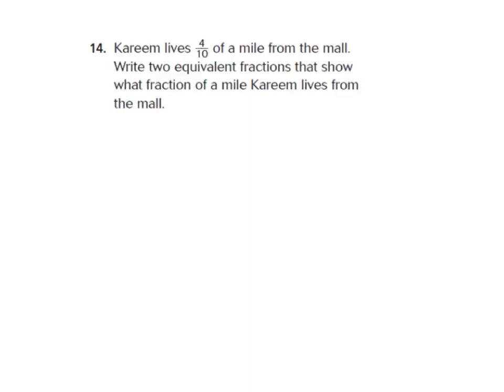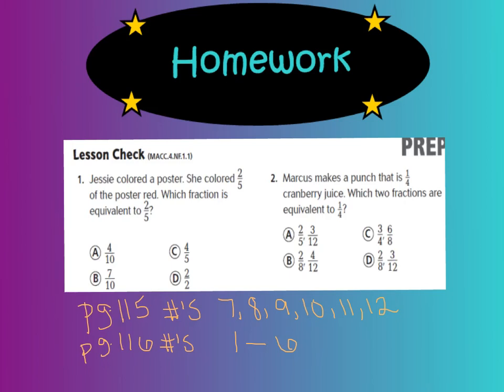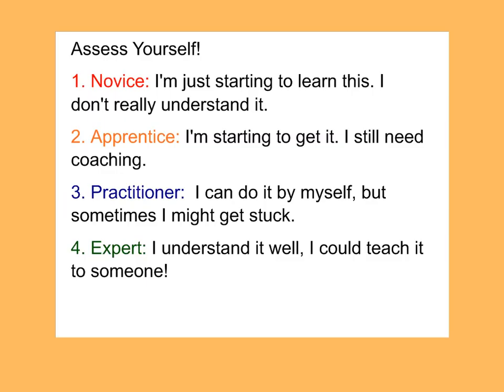For number 14, just put a star next to it — we'll work on that one tomorrow in class together. Here's your homework for tonight: numbers 1 and 2 in your GoMath book — number 1 find the equivalent fraction to 2 fifths, number 2 find which fractions are equal to 1 fourth. Also complete page 115 numbers 7 through 12, and all questions on page 116 numbers 1 through 6. When you're done, don't forget to assess yourselves. Have a good evening and we'll see you tomorrow in class. Bye!